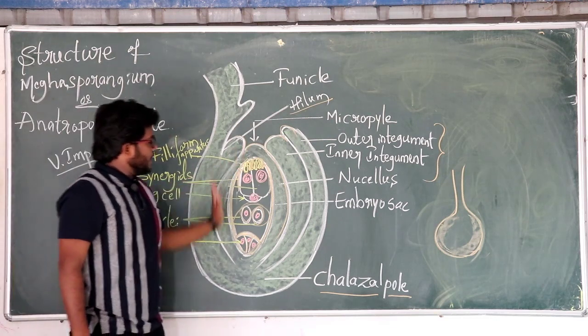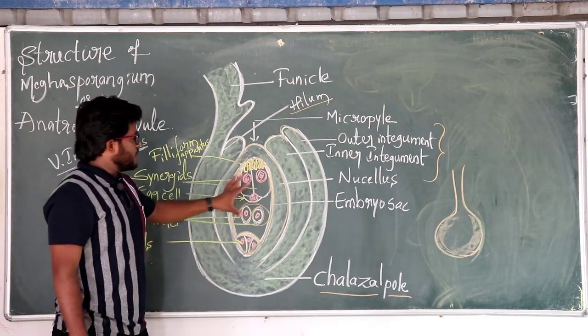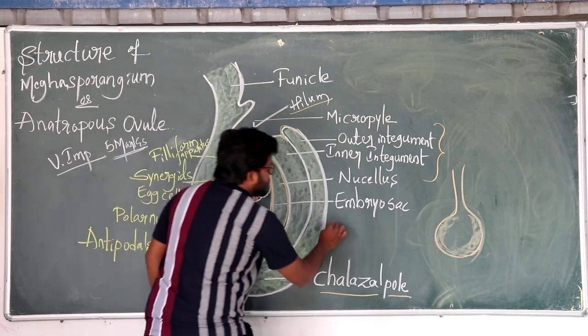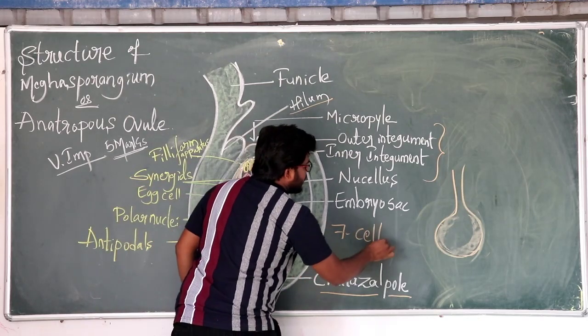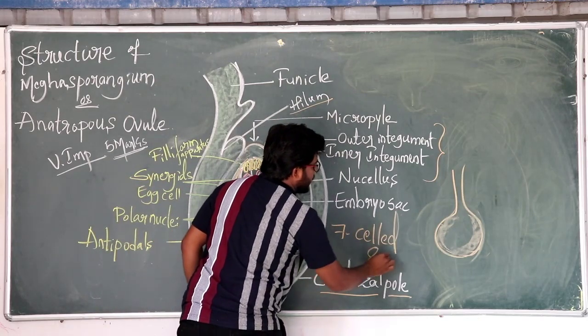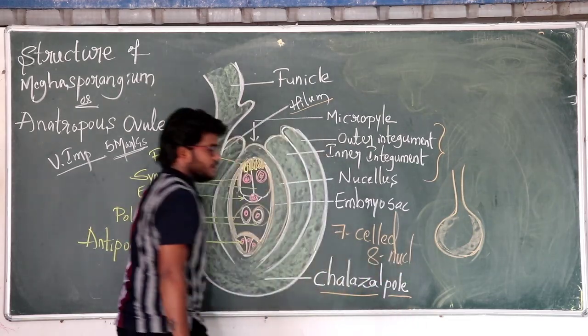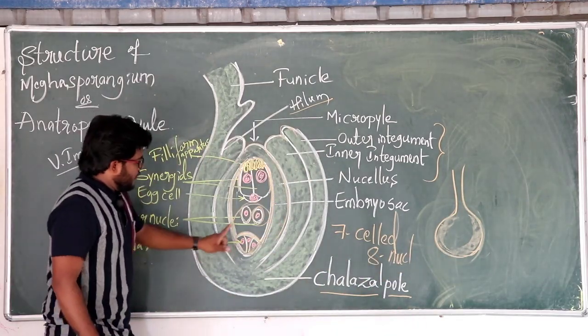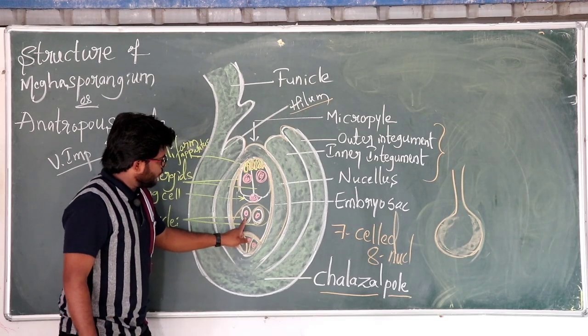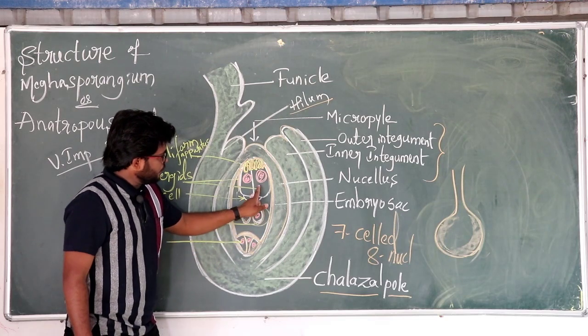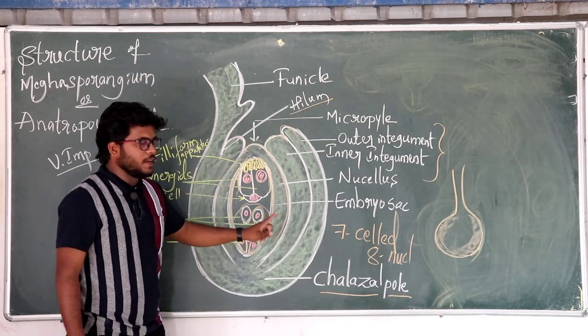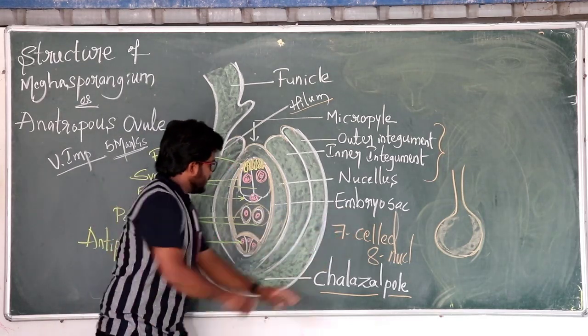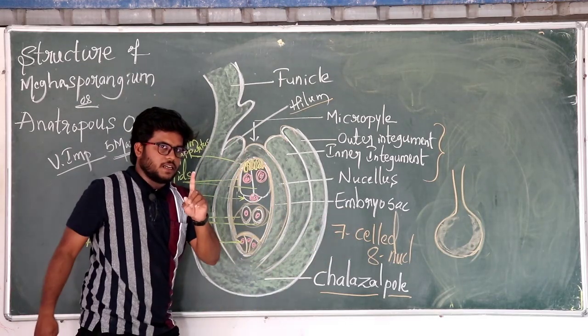Hence, the typical angiospermic embryo sac is seven celled, eight nucleated. Seven cells total. It together forms the secondary cell.